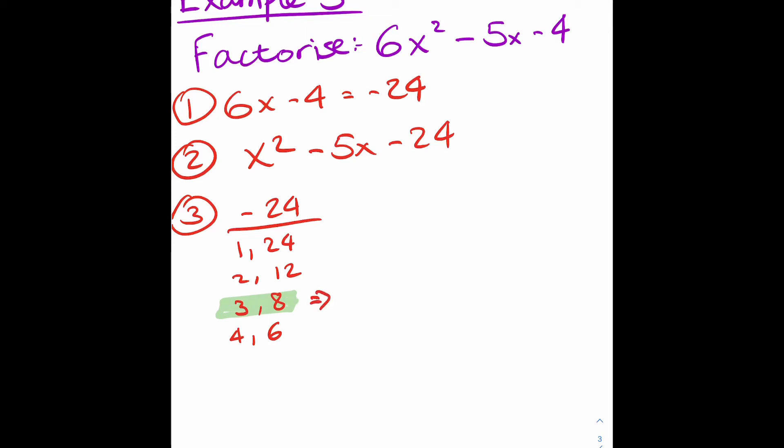You should be able to see where it would be 8 and 3, because 8 times 3 is 24, but I'm going to have to change the signs. It's going to be negative 8 and then add 3, which will give you negative 5.